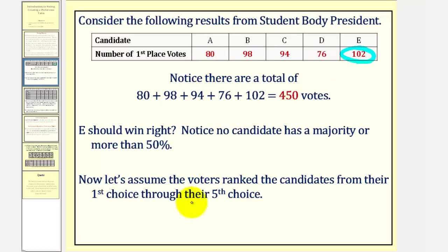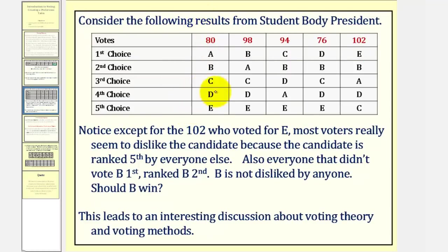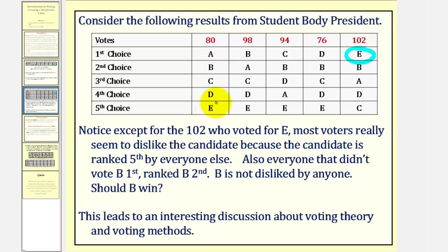Now let's assume that the voters rank the candidates from their first choice through their fifth choice. Here are the results, and this is called a preference table, which we'll define in just a moment. If we focus on candidate E, notice how except for the 102 who voted E as their first choice, most voters really seem to dislike the candidate, because candidate E is ranked fifth for everyone else.